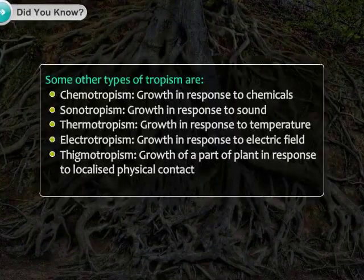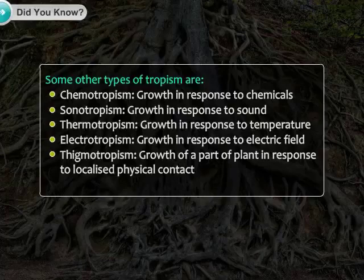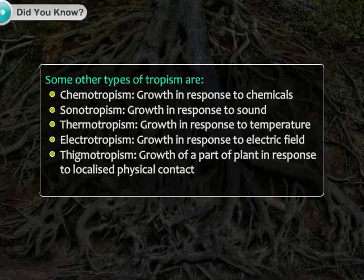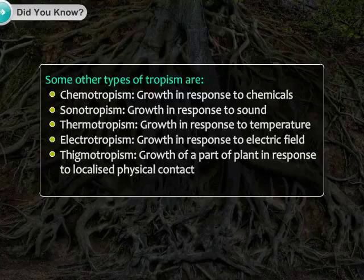Some other types of tropisms include: 4. Chemotropism — growth in response to chemicals; 5. Sonotropism — growth in response to sound; 6. Thermotropism — growth in response to temperature; 7. Electrotropism — growth in response to an electric field; and Thigmotropism — growth of a part of a plant in response to localized physical contact.